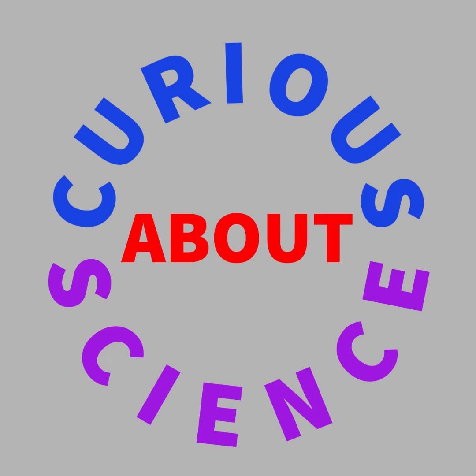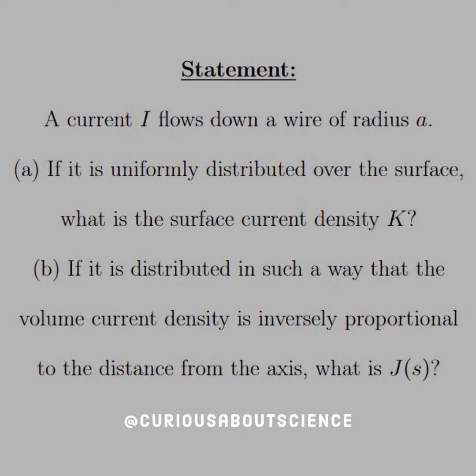Welcome back. More magnetic field with currents coming up. The statement reads: a current I flows down a wire of radius a.